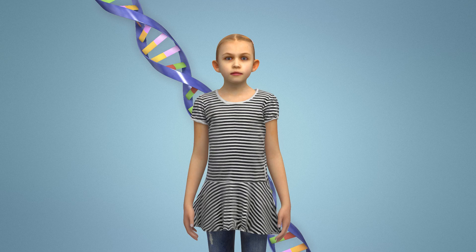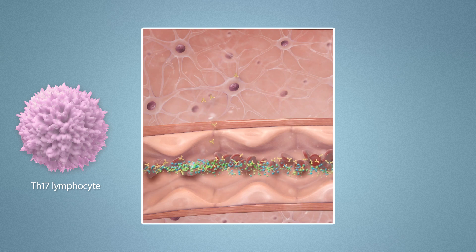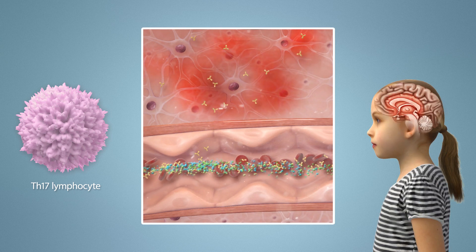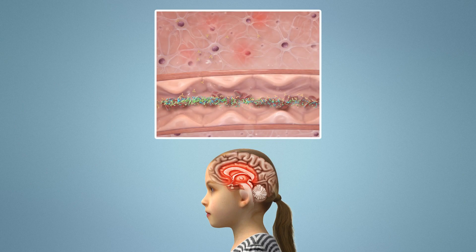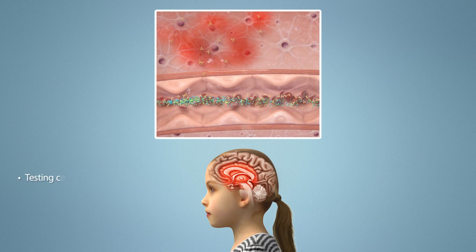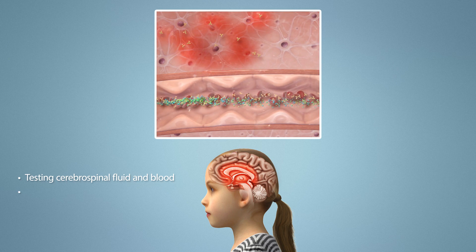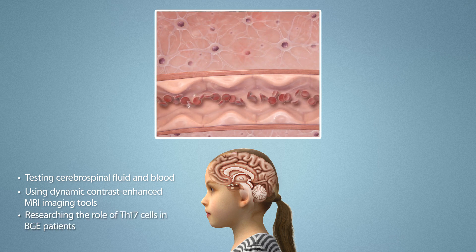Certain children and adults may be genetically susceptible to autoimmunity, which might explain why they develop BGE after GAS infection — a very common illness — and others do not. With the identification of Th17 lymphocytes as major players in causing the breakdown of the BBB after repeated GAS infections in mice, studies are currently underway to examine the role of Th17 cells in humans suffering from post-infectious BGE. If similar Th17-mediated responses are found in human studies, options could include testing cerebrospinal fluid and blood for inflammatory cytokines indicating a Th17 response, using dynamic contrast-enhanced MRI imaging to detect BBB breakdown during flare-ups, and researching the role of Th17 cells in BGE patients.